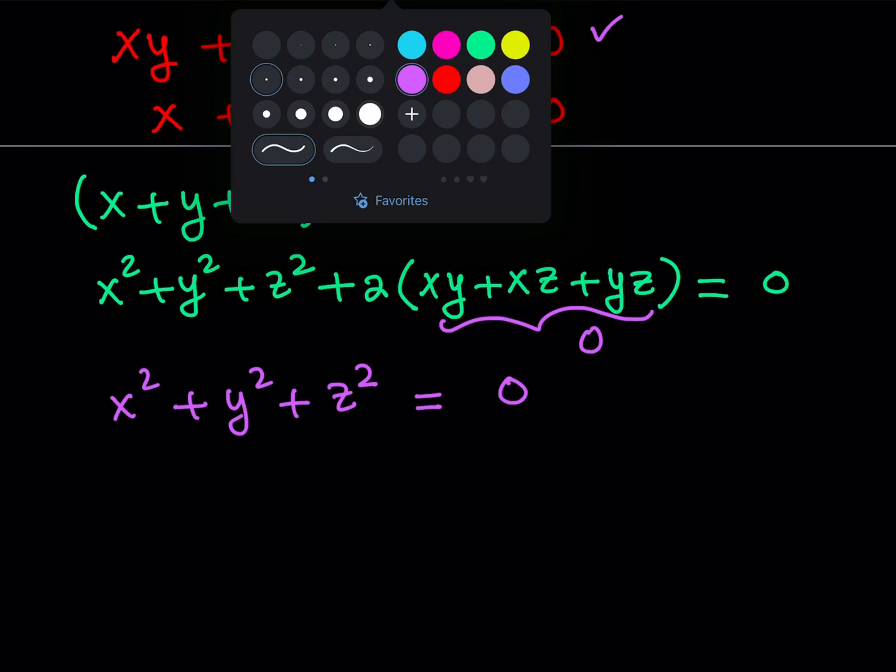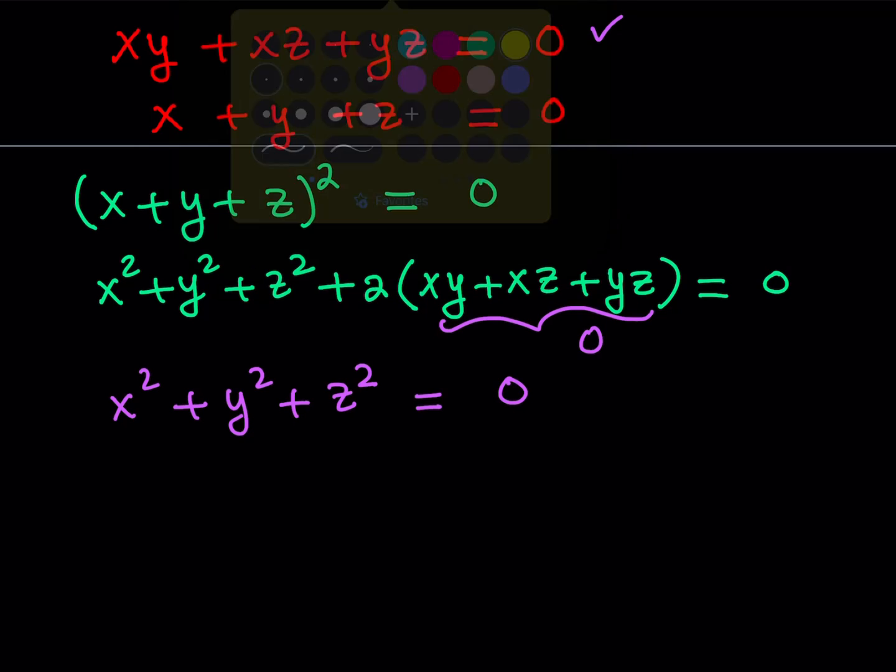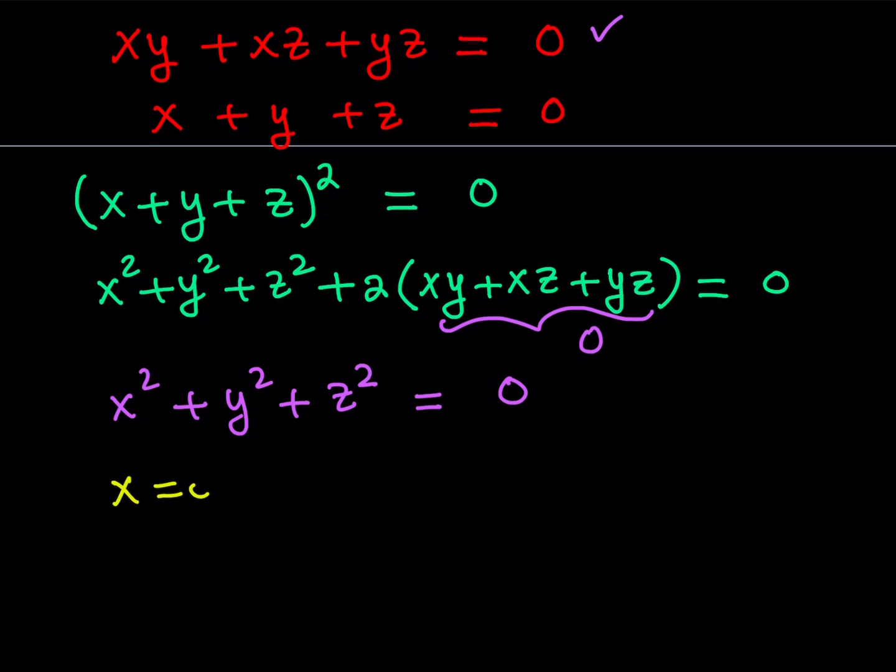So how do you write that? This just means that x has to equal 0, y has to equal 0, and z has to equal 0. Not only one of them, but all three have to equal 0 at the same time, if you're looking for real solutions.